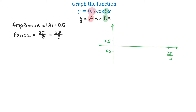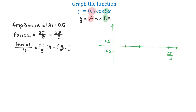We will graph this function over this period. Now, we need to find the coordinates of the 5 points on the graph — these will be the maximum points, the minimum points, and the x-intercepts. For this, we will divide this interval into 4 sub-intervals. To find the lengths of each sub-interval, we take the period and divide it by 4. So the period divided by 4 equals 2π over 5 divided by 4, which is the same as 2π over 5 multiplied by 1 over 4. We get that the quarter period is π over 10.